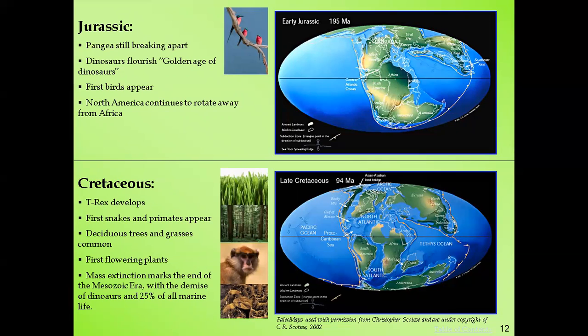During the Jurassic, the first birds appeared. North America continued to rotate away from Africa — slowly moving further apart. The continents were still in the process of breaking apart.